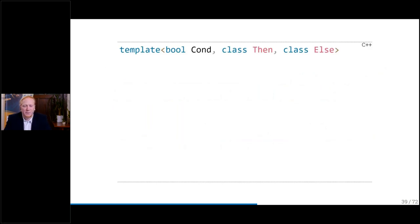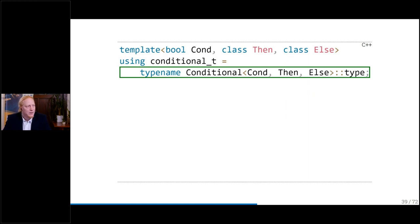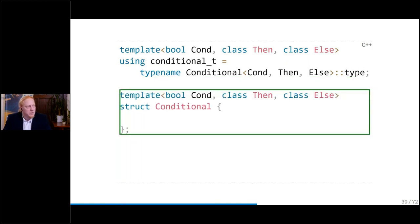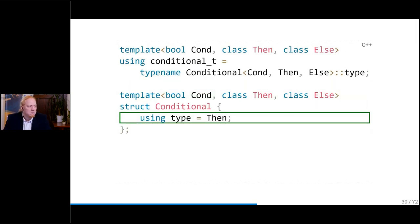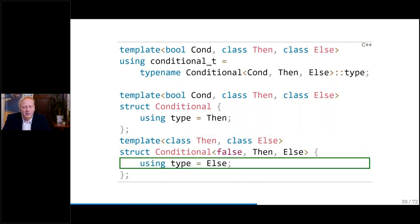The reference implementation is basically: we get a template and lift it into a structure. We have to create a templated structure that has a member type containing the resulting type. Implementing the structure — again templated by the bool for the conditional, the then-type, or the else-type — in the 50% true case we give back the then-case. And we have a template specialization where we say: given the first bool template argument is false, our resulting type is the else-type.